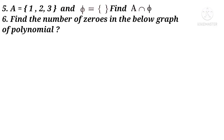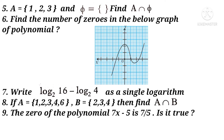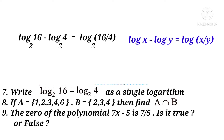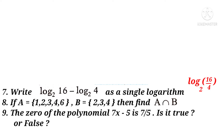Question 5: If A = {1, 3} and φ is the empty set, then A intersection φ equals φ (the empty set), since intersection gives the smallest common set. Question 6: The polynomial graph intersects the x-axis at three different places, so the number of zeros is 3. Question 7: log 16 base 2 minus log 4 base 2 = log(16/4) base 2, using log x − log y = log(x/y). Question 8: If A = {1,2,3,4,6} and B = {2,3,4}, then A intersection B = {2,3,4} = B.